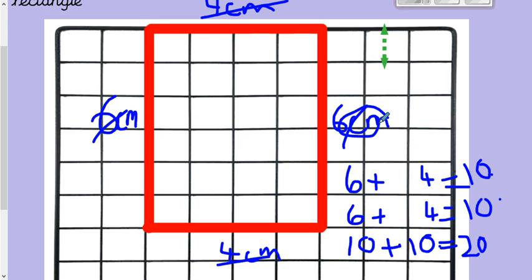Now remember, it's in centimetres, so we need to write the centimetres on the end. So you could also times 10 by 2, because as you can see, we just added it twice. If you wanted a shortcut, you could have just times 10 by 2, and that would have got your answer as well.